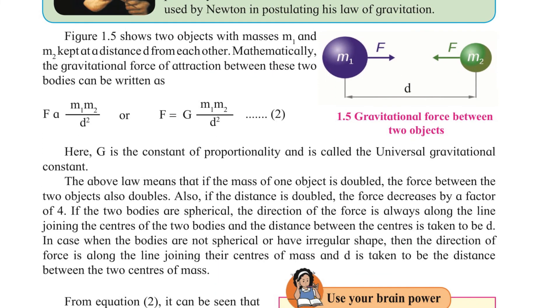In figure 1.5, two objects with masses m1 and m2 are kept at a distance from each other. Mathematically, the gravitational force of attraction between these two bodies can be written as F = G(m1*m2)/d². Here, G is the constant of proportionality and is called the universal gravitational constant.